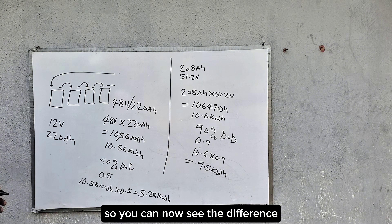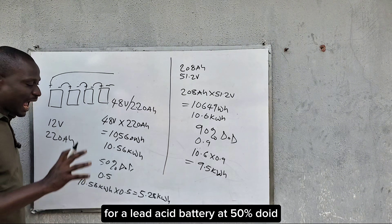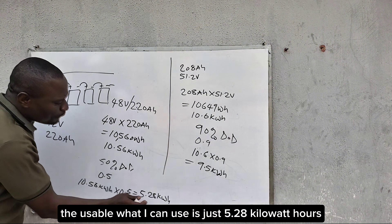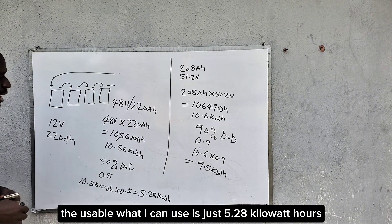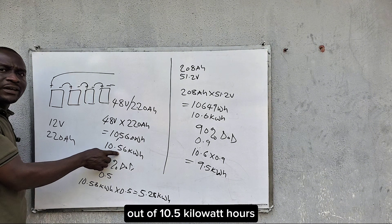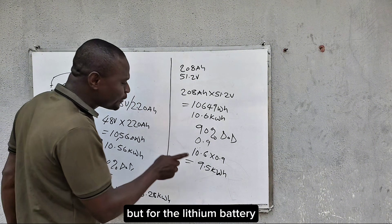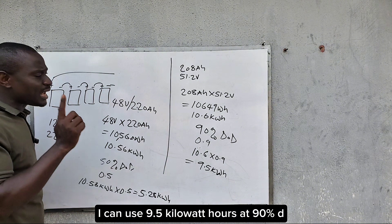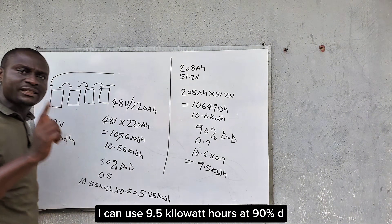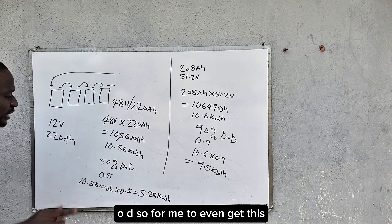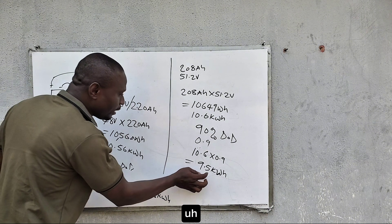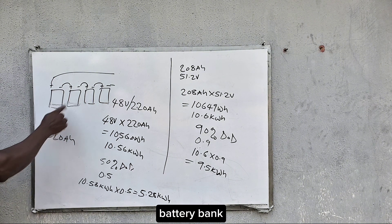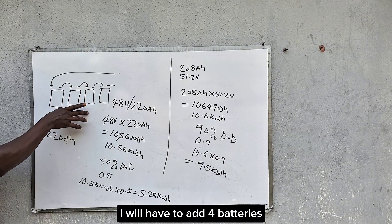You can now see the difference. For a lead acid battery at 50% DoD, the usable energy is just 5.28 kilowatt hours out of 10.56 kilowatt hours. But for the lithium battery I can use 9.5 kilowatt hours at 90% DoD. To even get close to that usable capacity with lead acid batteries, I would have to add four more batteries.